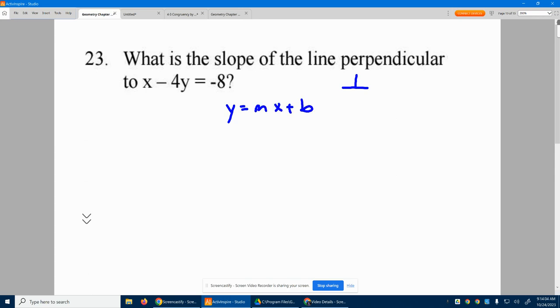Remember, it's always y equals mx plus b, where m is your slope. I need the slope of this line first, and then I'll figure out what the perpendicular slope is. So, to do that, I need the y by itself.